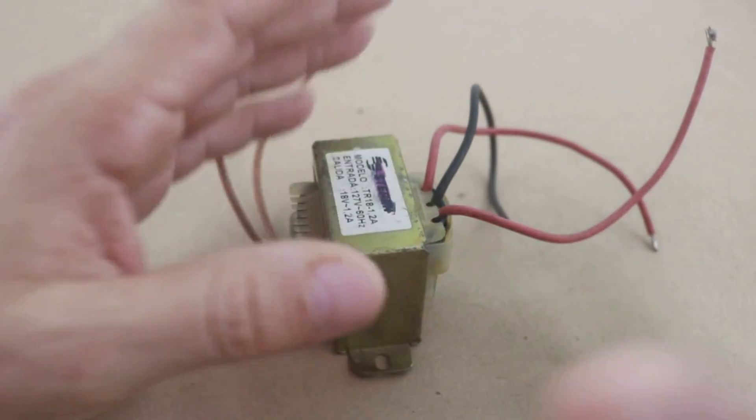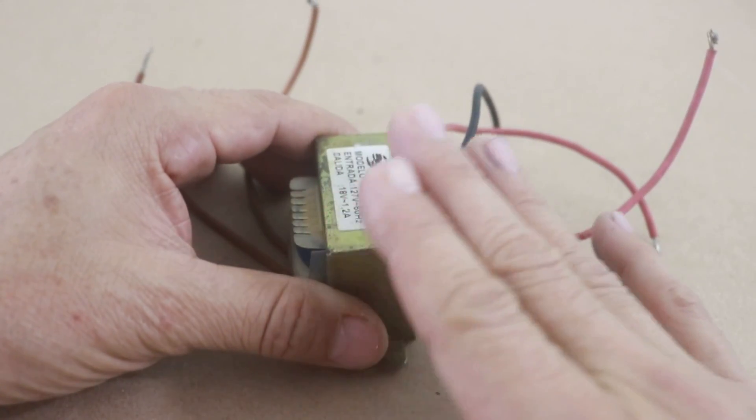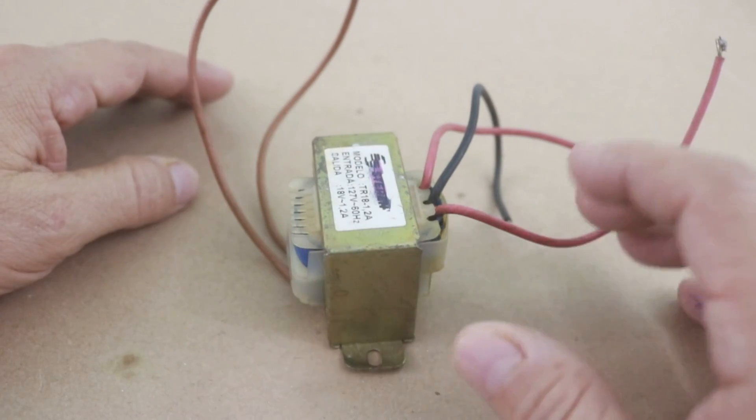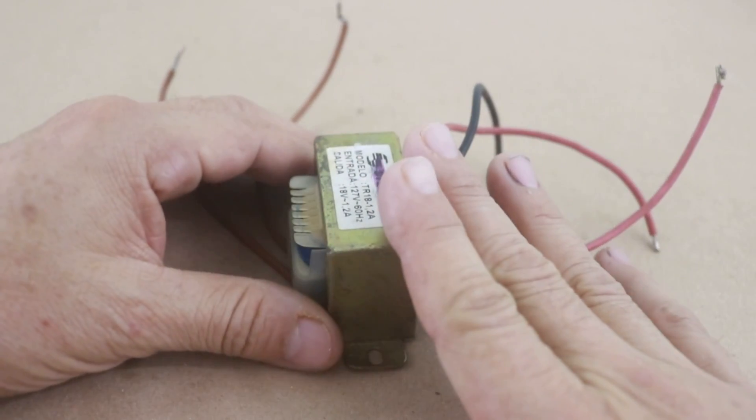For example, a transformer of 100 watts if you wire it as autotransformer can give you 20 to 30% more power for the same quantity of iron.